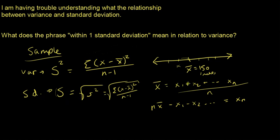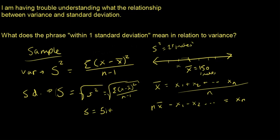Why do we take the square root? Why do we even have standard deviation? Consider our tree example where the sample mean is 150 inches. Say the variance comes out to be 25 — but 25 what? 25 inches-squared, because we squared something in the formula, so the units get squared too. Standard deviation fixes that problem: the square root of 25 is 5, so the standard deviation is 5 inches — something I can actually interpret. Inches-squared is not interpretable.